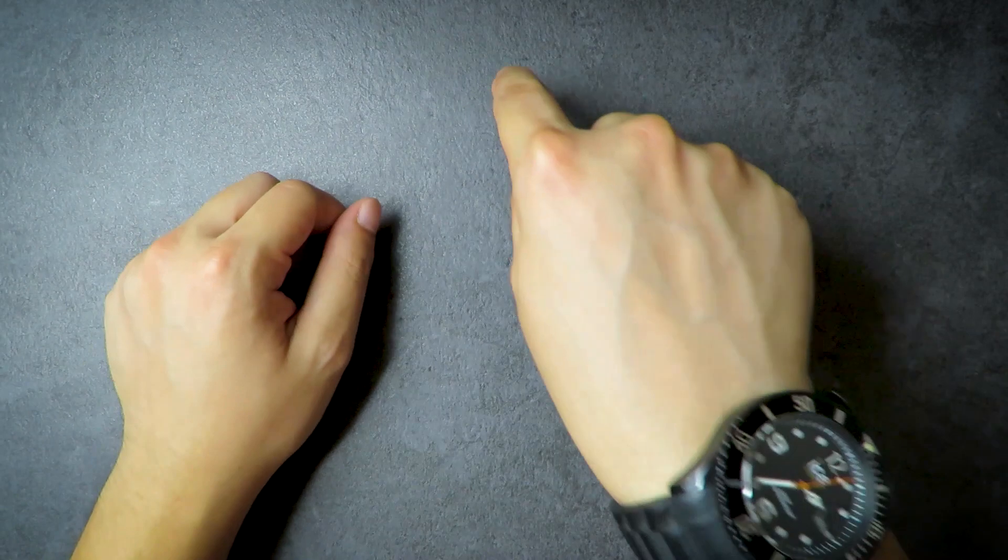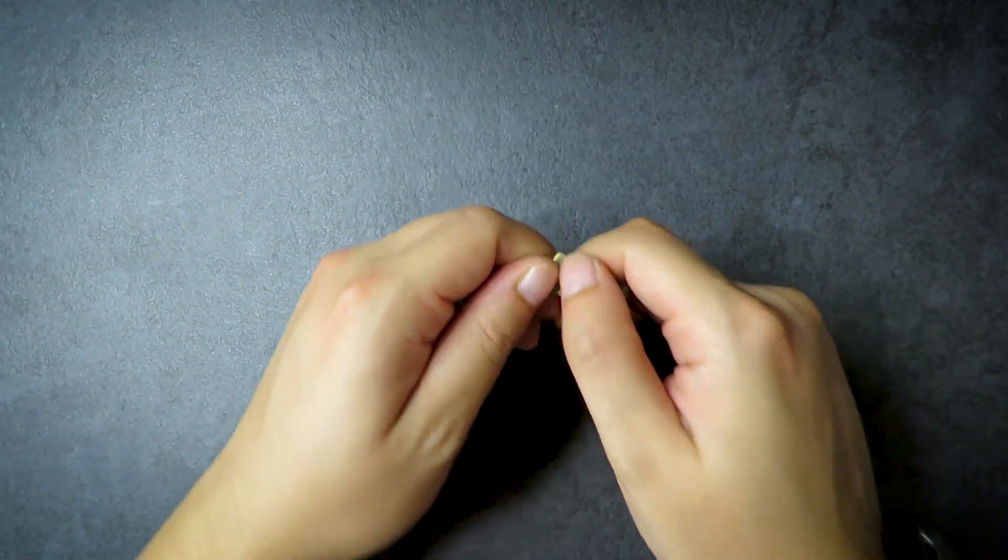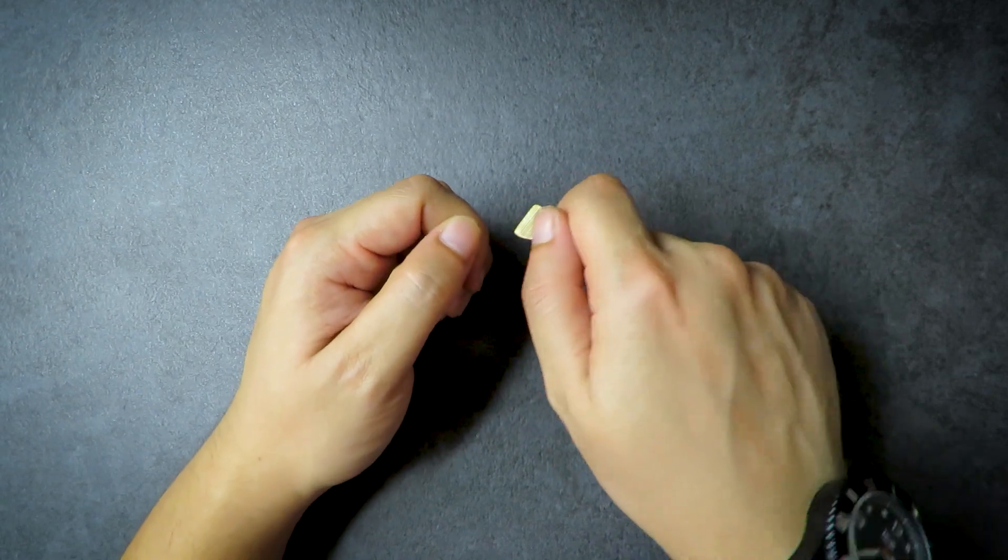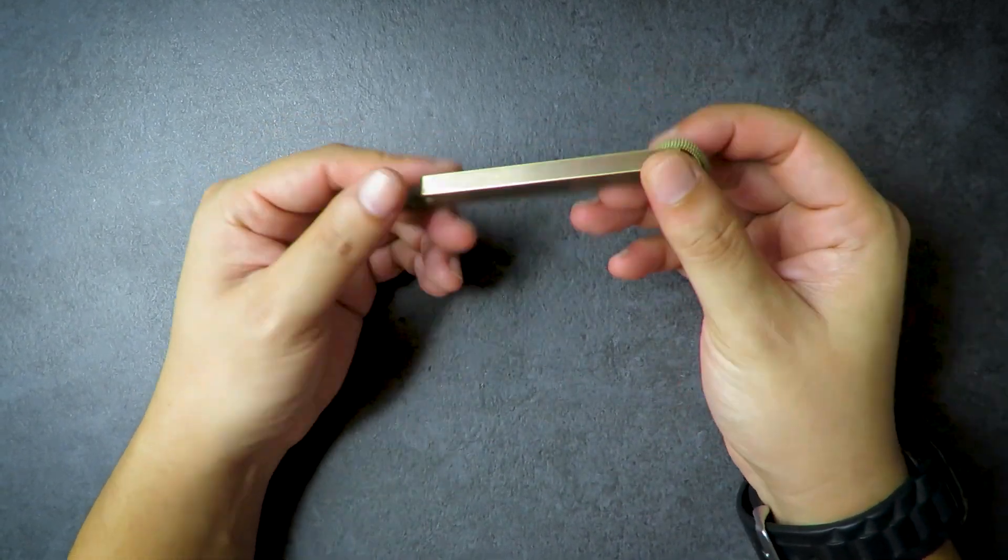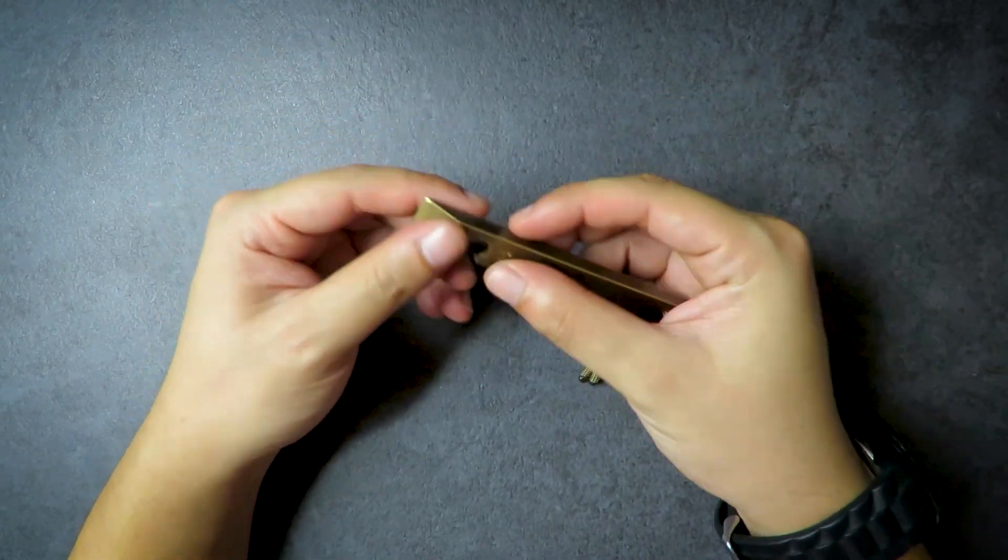So with this guy, I would just file this down or sharpen one of the corners here, or maybe this corner here, to get it really sharp so you can use it as a box opener, as a box cutter, or you can use it to get into really tight nooks and crannies to pry something open. So yeah, that's pretty much it. Very short review because there's nothing much to talk about. It's just a brass pry bar.